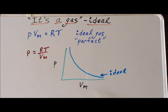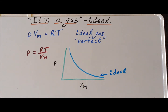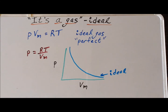In constructing such a curve of pressure versus molar volume, we do this at a particular temperature, and because of that, this type of curve is called an isotherm. 'Iso' is a Greek prefix meaning 'the same,' and 'therm' is from temperature, as in the word thermometer. So the blue line is the isotherm for the ideal gas.